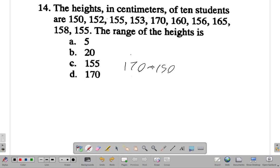Now, 170 minus 150 is going to be 20. You have 170 minus 150, so that's a difference of 20. Therefore, our answer here is 20. Alright, so that is the range of the heights - the largest minus the smallest value.